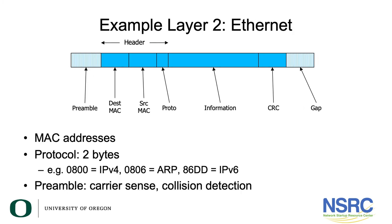Now let's have a look at Ethernet — very important and very common. An Ethernet frame looks like this: it starts with a preamble, then has a header containing a destination MAC address and a source MAC address. These are the Media Access Control addresses that identify each Ethernet device. A MAC address is a 48-bit number programmed into the network card by the manufacturer, so in principle all network cards in the world should have unique MAC addresses. In the header you also have a protocol field that identifies the Layer 3 protocol, followed by the information field and the CRC.